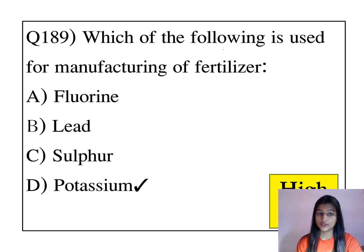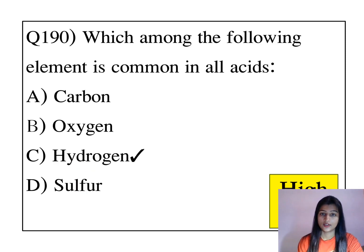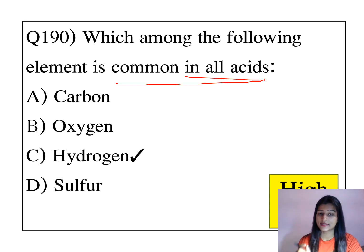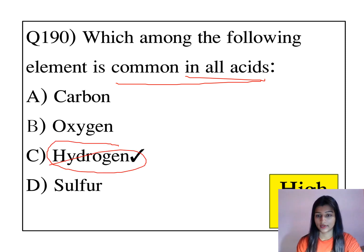Which of the following is used for manufacturing of fertilizer? Potassium is used for the manufacturing of fertilizer. Which among the following elements is common in all acids? Whether it is sulfuric acid or hydrochloric acid, you will find hydrogen as the common element.